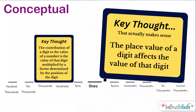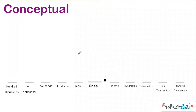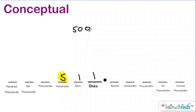Let's really break it down. Here I have 511. I want to know: what is this 5 worth? Now many of you already know that it's worth 500 because it's a 5 in the hundreds place — that's the common language. The place value of the digit affected the value of that digit.